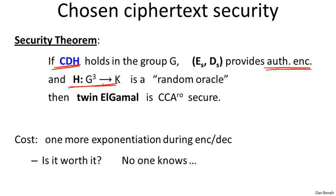What is the cost of this? During encryption, the encryptor has to do one more exponentiation — three exponentiations instead of two. The decryptor does two exponentiations instead of one. So you do more work during encryption and decryption and your public key is a little bit bigger. As a result, you get chosen ciphertext security based on a more natural assumption — computational Diffie-Hellman — as opposed to the odd-looking interactive Diffie-Hellman assumption.